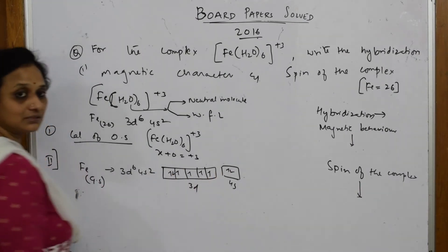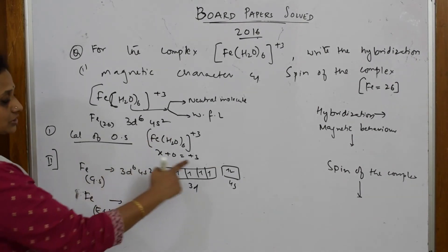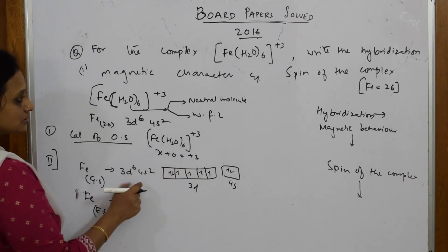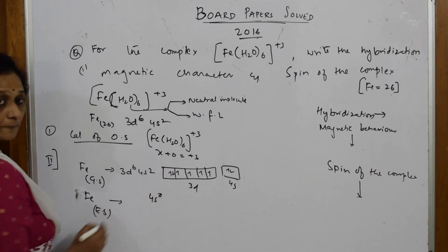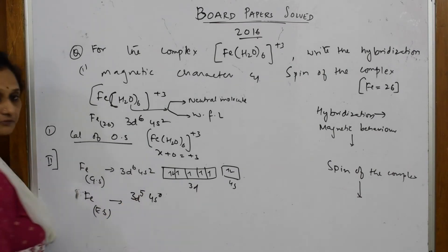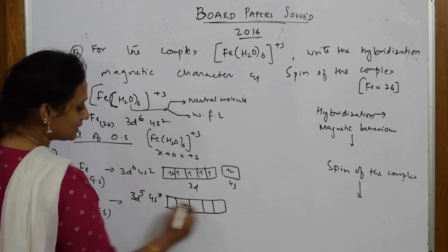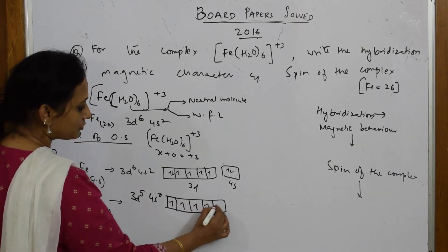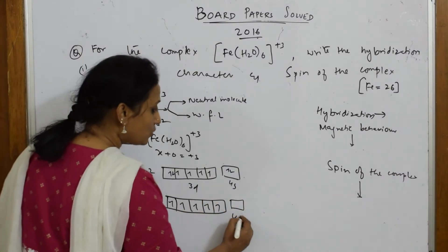Now iron in the excited state. After losing three electrons, 4s loses two electrons becoming 4s0, and one electron from 3d, becoming 3d5. So now: 5 half-filled electrons and 4s0 - nothing.